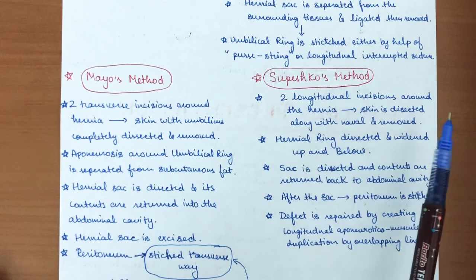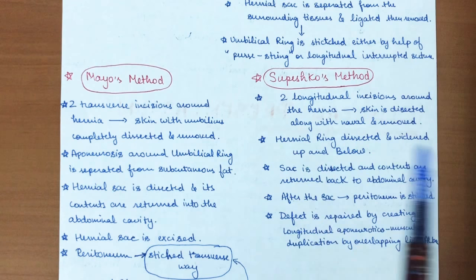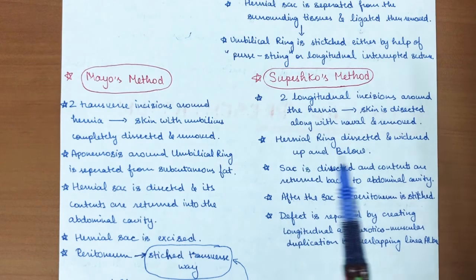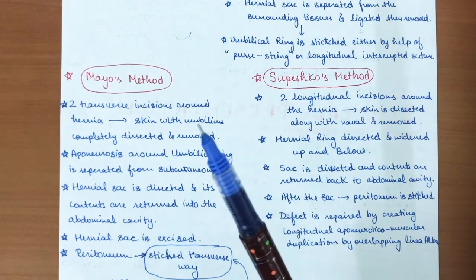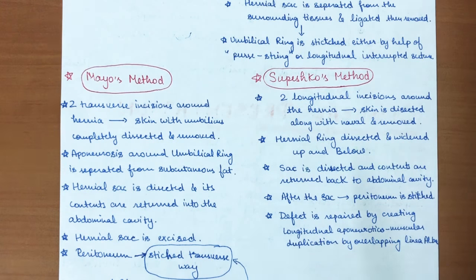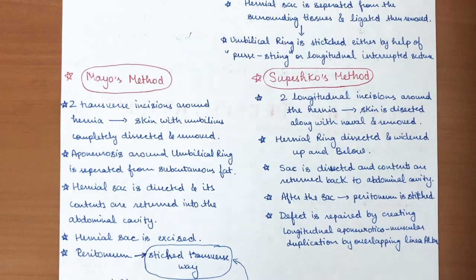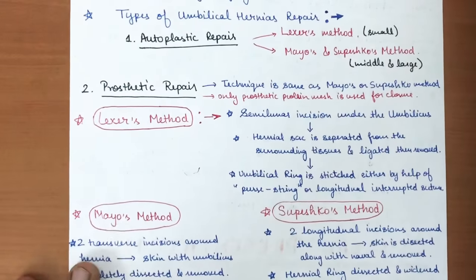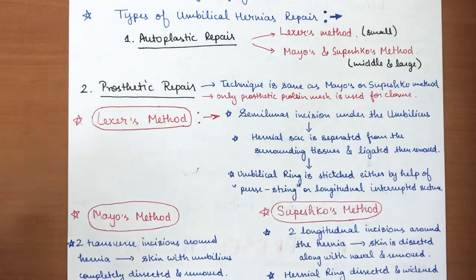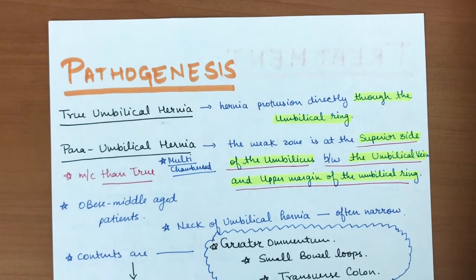In the Spasokukotsky method, two longitudinal incisions are made around the hernia, the skin is dissected along with the navel and removed. The hernia ring is dissected and widened up and below, the sac contents are returned to the abdominal cavity, the peritoneum is sutured, and the defect is repaired by creating a longitudinal aponeurotic muscular duplication by overlapping the linea alba. In prosthetic repair, only prosthetic polypropylene mesh is used for closure, which is the main difference from autoplastic repair.